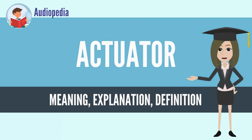When it receives a control signal, an actuator responds by converting the signal's energy into mechanical motion. An actuator is the mechanism by which a control system acts upon an environment. The control system can be simple: a fixed mechanical or electronic system, software-based (e.g. a printer driver), a robot control system, a human, or any other input.